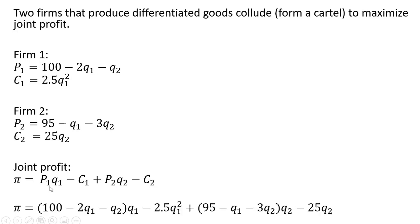We're going to substitute in for P subscript 1, plugging in 100 minus 2Q subscript 1 minus Q subscript 2, and that's all multiplied by Firm 1's output — that is the revenue of Firm 1 — then subtracting the cost of production for Firm 1. For Firm 2, revenue is price times quantity, so the price is 95 minus Q subscript 1 minus 3Q subscript 2, multiplied by Firm 2's output, and we subtract out Firm 2's cost.